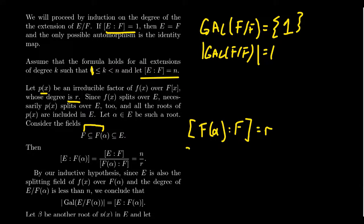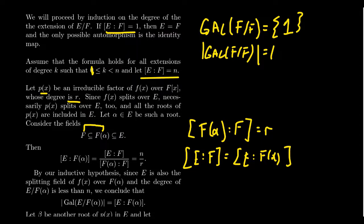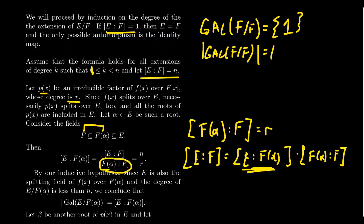Since P(x) is irreducible of degree R, the extension F(α) over F has degree R. Degrees are multiplicative, so the degree of E over F equals the degree of E over F(α) times R. Therefore the degree of E over F(α) equals N/R. This is really where the finite extension hypothesis comes into play — the cardinal arithmetic would be more complicated in the infinite case.